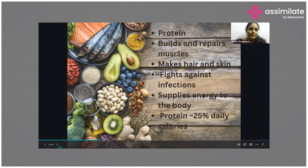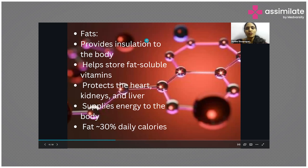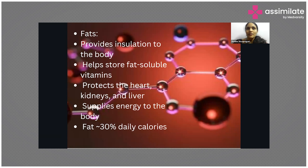Coming to fats: fats are like the protective layer for the body. Just as a car is coated and protected with a metallic structure, our organs are protected with fat — there is fat around the kidneys, around the liver, and subcutaneously under the skin. Fat is essentially the insulating system — it keeps us warm, protects our organs, and helps store certain fat-soluble vitamins.